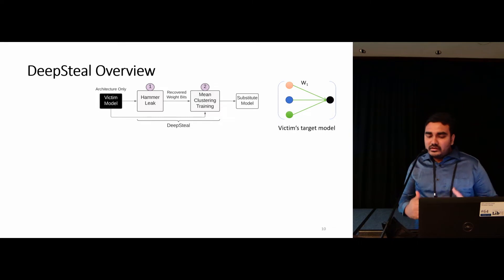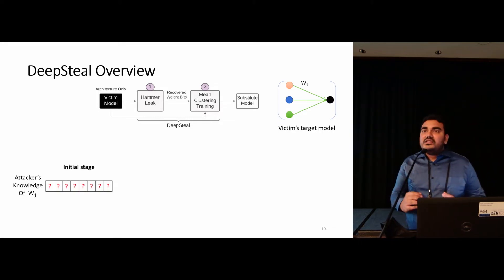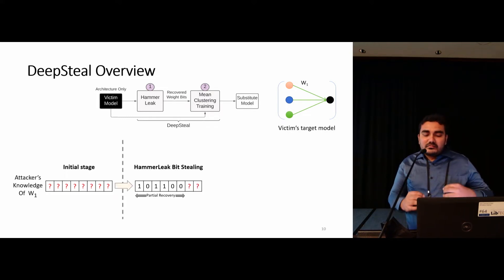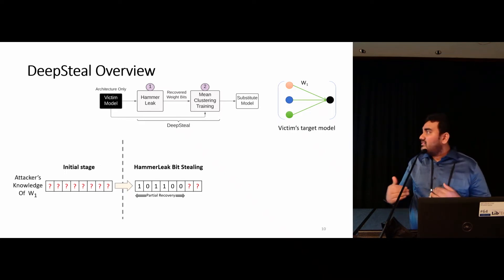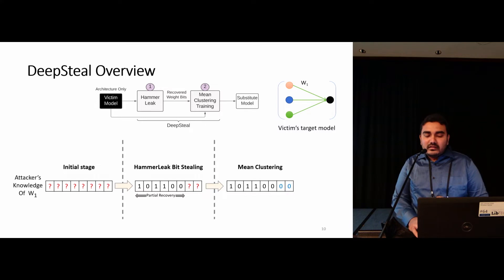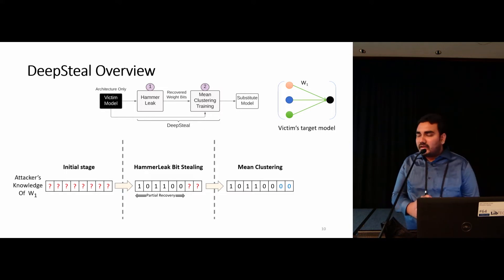As a brief example, assume the attacker's goal is to recover the weight W1 from this victim model. Initially, the attacker has no information about this weight W1. HammerLeak steals as many bits as possible from this weight using rowhammer-based information leakage attack. Then, mean clustering training is performed on the other bits to approximate the remaining bit information of this weight and then train a substitute model based on that.